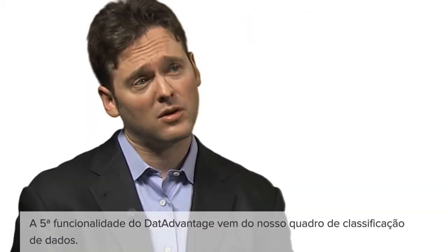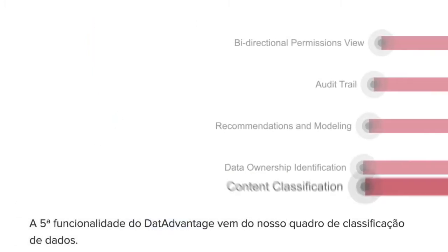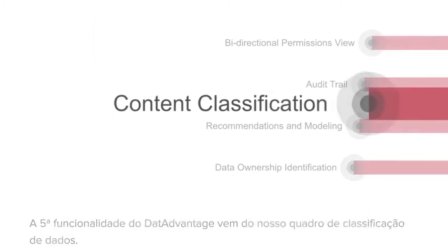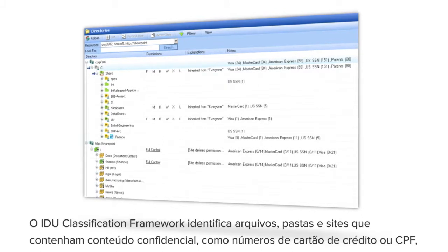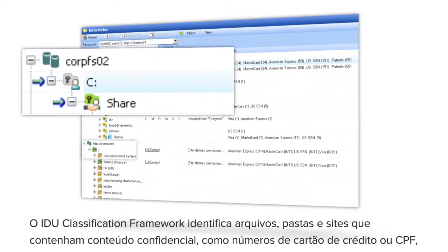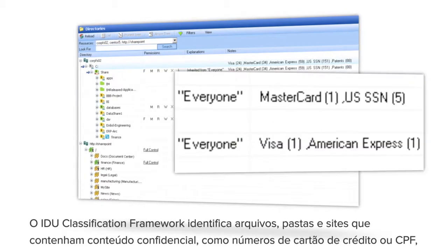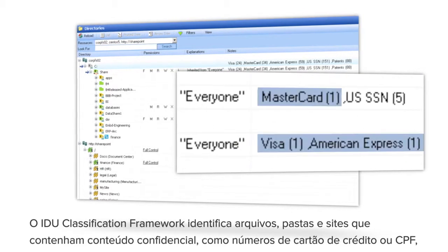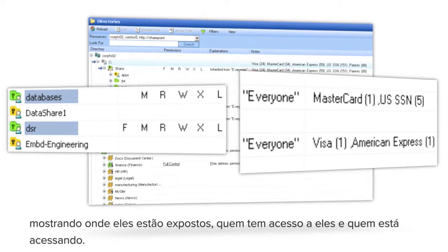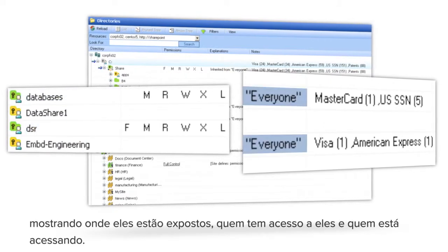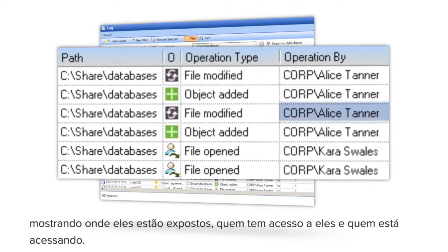The fifth core piece of functionality in Data Advantage comes from our Data Classification Framework. The IDU Classification Framework identifies files, folders, and sites that contain sensitive content, like credit card numbers or social security numbers, showing where they're exposed, who has access to them, and who is accessing them.